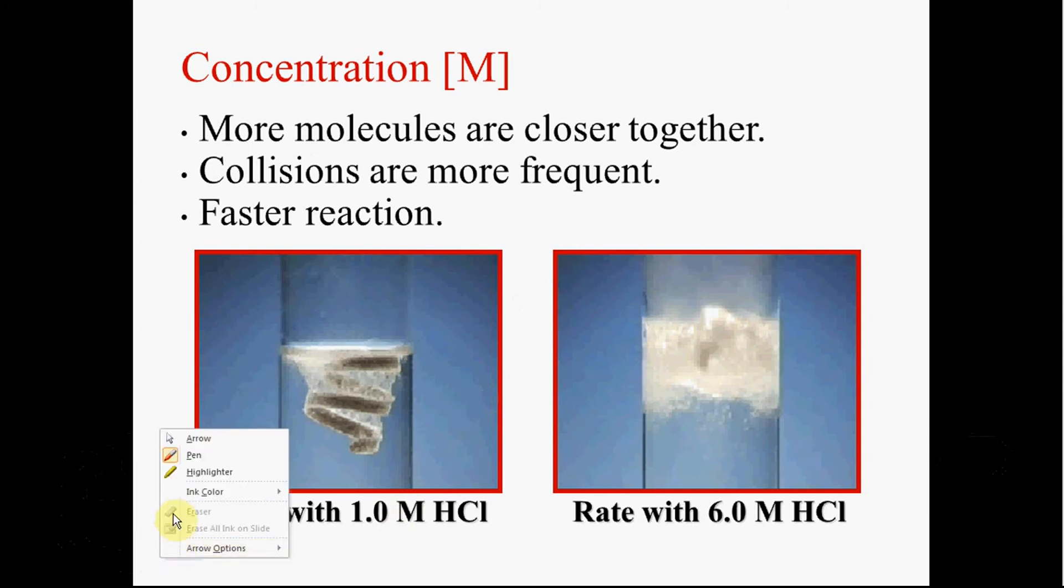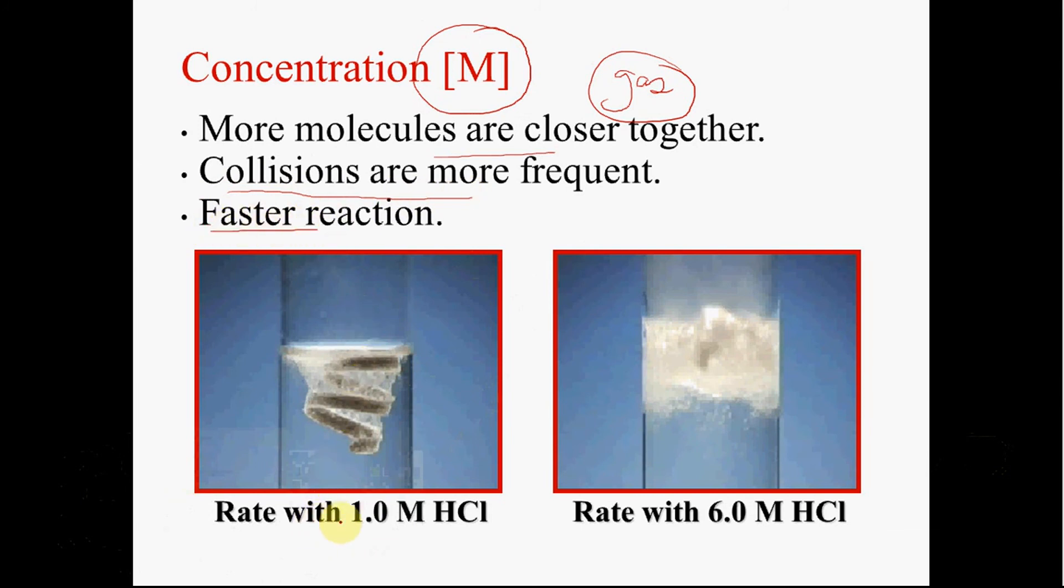Concentration. We know that increasing concentration also increases rate any time we want a faster reaction. We know that we can increase the molarity of our acid. Or, for a gas, we would be able to decrease the volume of the container, but if the molecules are closer together, then they're going to collide more frequently, you're going to get a faster reaction. So 1 molar HCl versus 6 molar HCl, it's pretty clear that the 6 molar is going to react faster as you have more collisions that are closer together because you literally have more molecules in contact with each other.